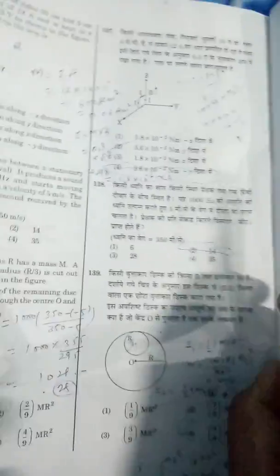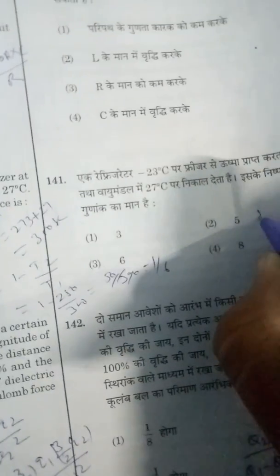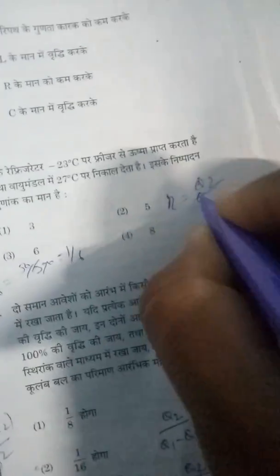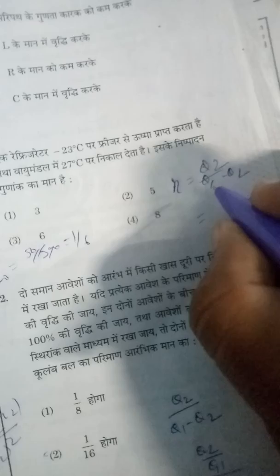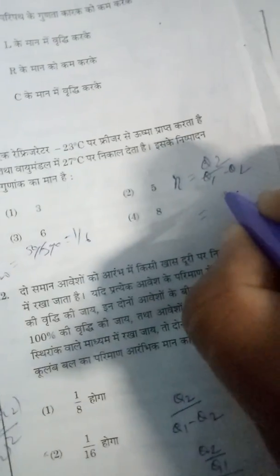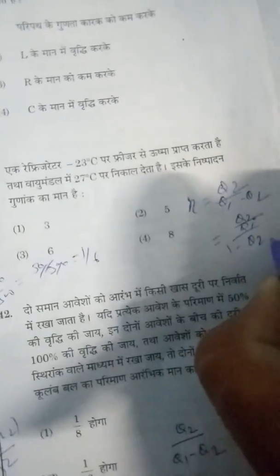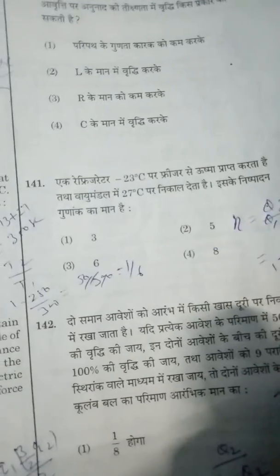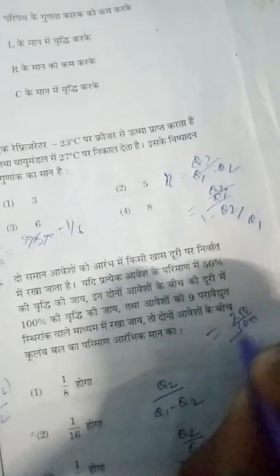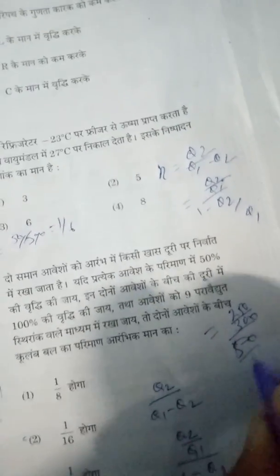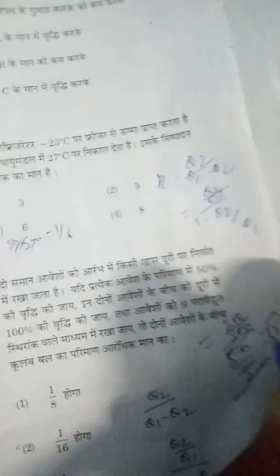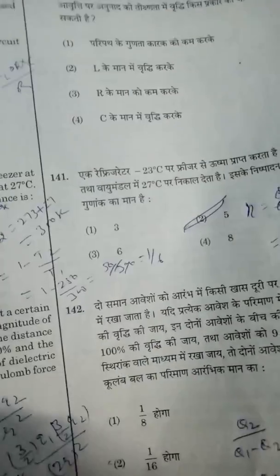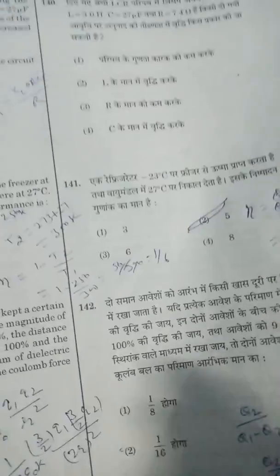Also, for problem number 141, the efficiency of the refrigerator is Q2 by (Q1 - Q2). On dividing numerator and denominator by Q1, we get Q2/Q1 divided by (1 - Q2/Q1). And Q2/Q1 equals T2/T1. On solving this we get 250/300 divided by (1 - 250/300), which is 250/300 divided by 50/300. Solving this gives value 5. The solution for this is option 2. In the previous video I gave option number 3, so please check it.